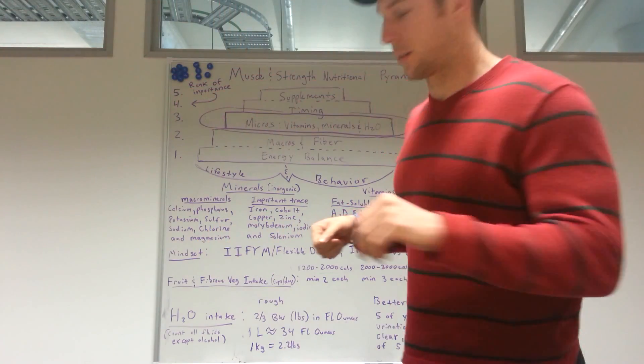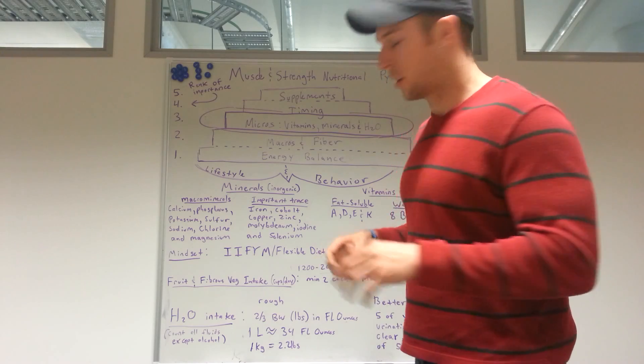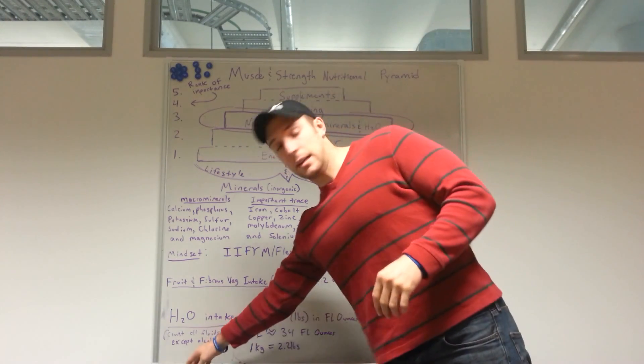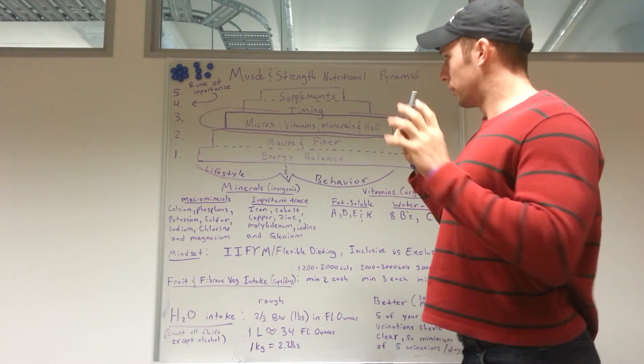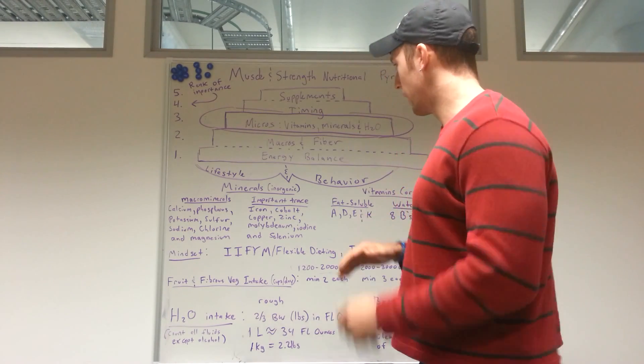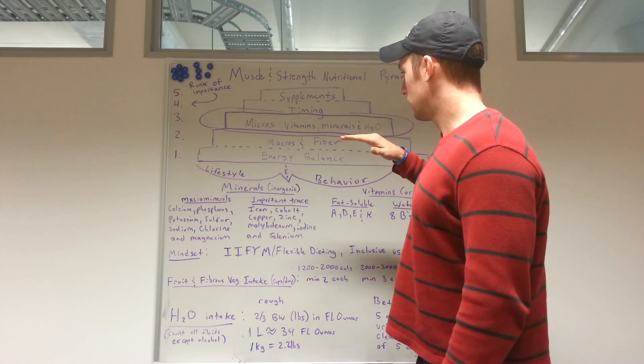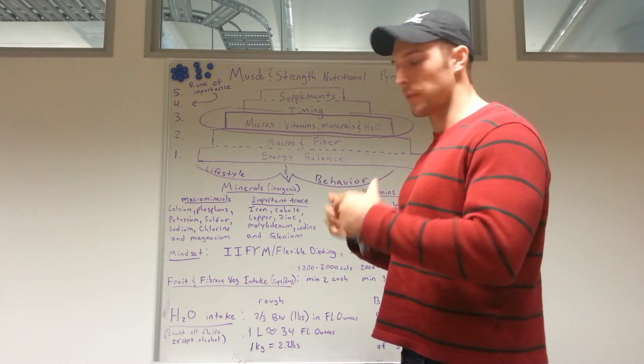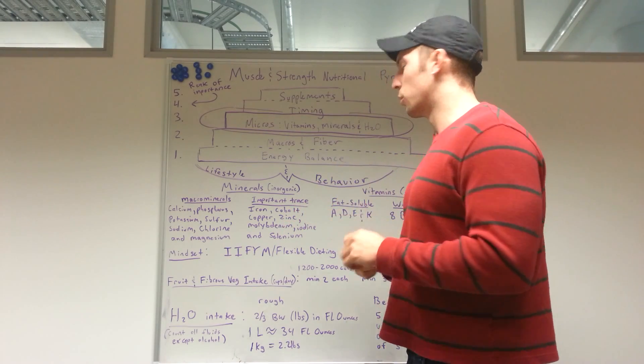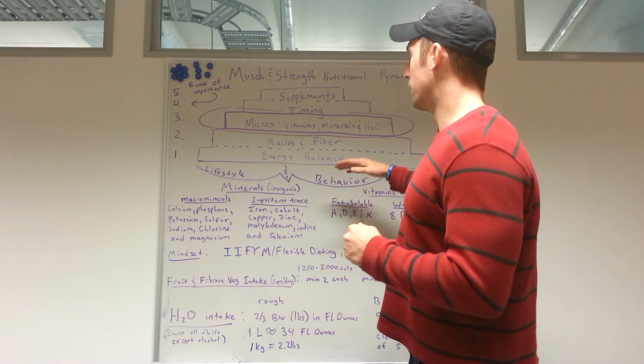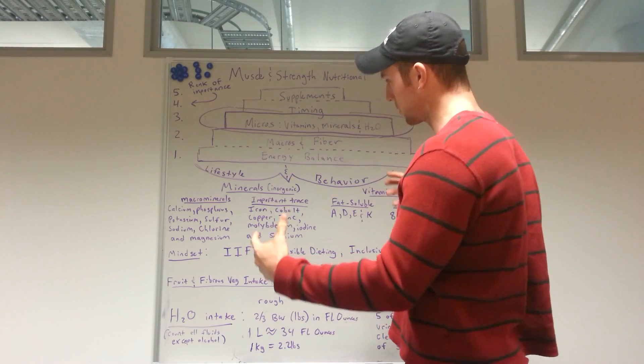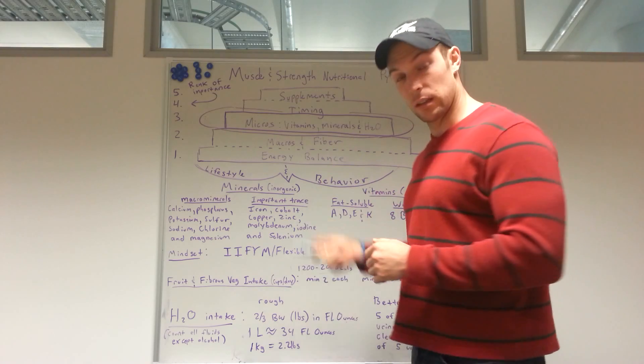Alright ladies and gents, welcome to the third installment of the Muscle and Strength Pyramid. Quick recap: we've had energy balance, rate of weight gain and calorie intake as our foundation or at least our first level, and then macronutrients and fiber intake as the composition of those calories as our second level.